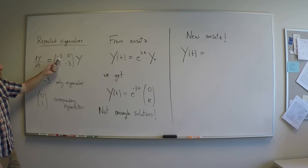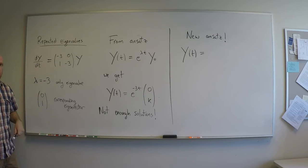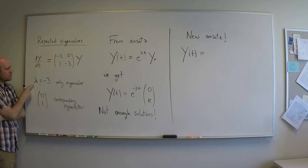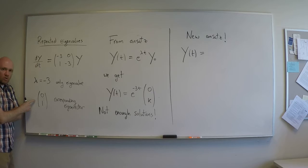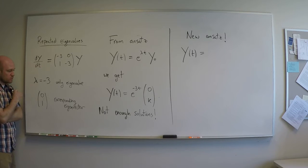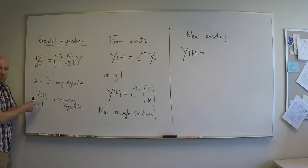So this example, minus 3, 0, 1, minus 3, you can pretty easily compute that there's only one eigenvalue for that matrix, it's lambda equals minus 3, and there's only one corresponding line of eigenvectors, one vector in the corresponding basis of eigenvectors, and that's 0, 1.